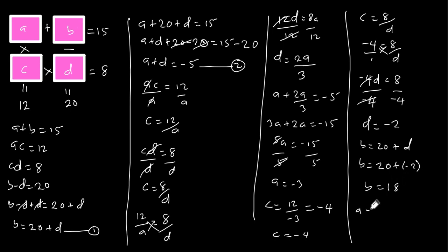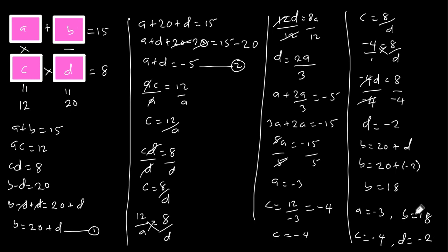So our solutions are: A is equal to negative 3, B is equal to 18, C is equal to negative 4, and lastly D is equal to negative 2. Let's plug these values into the boxes and check whether we're correct.